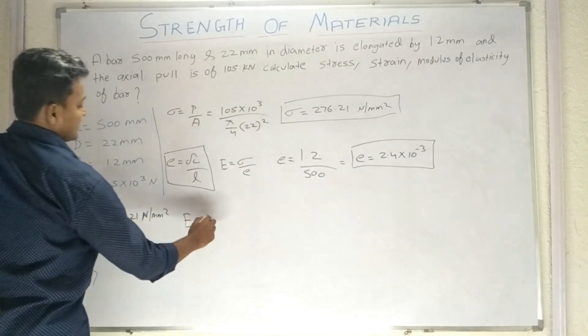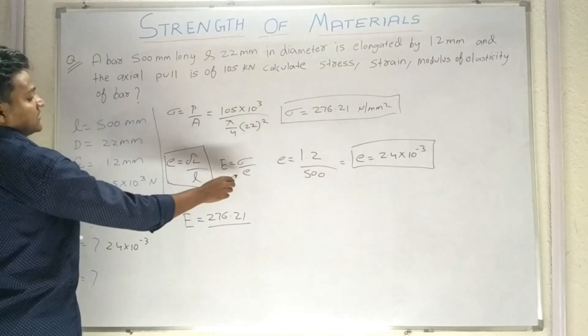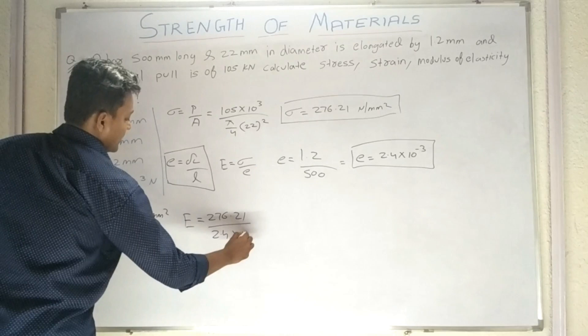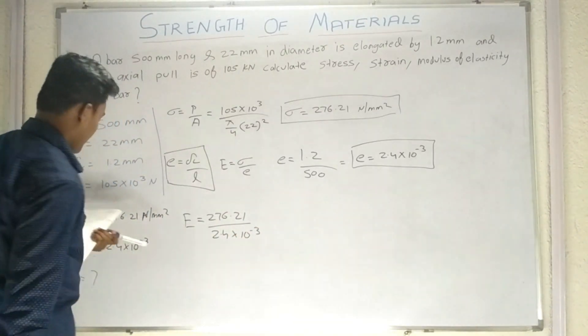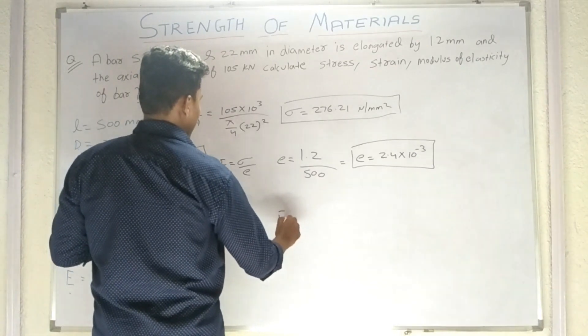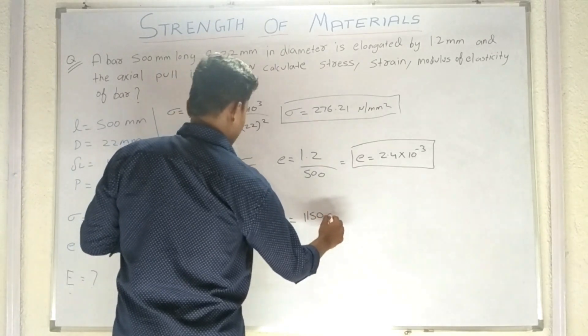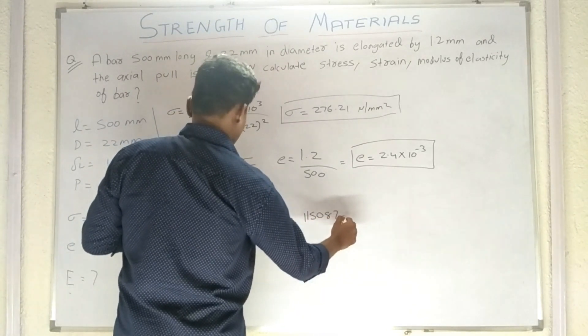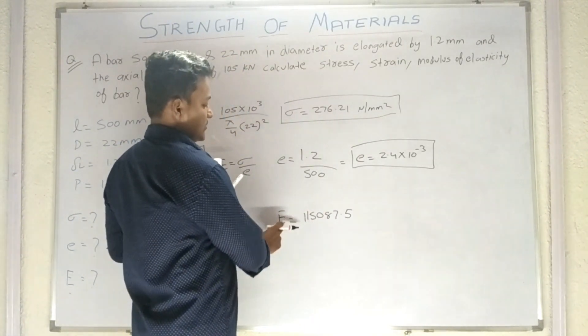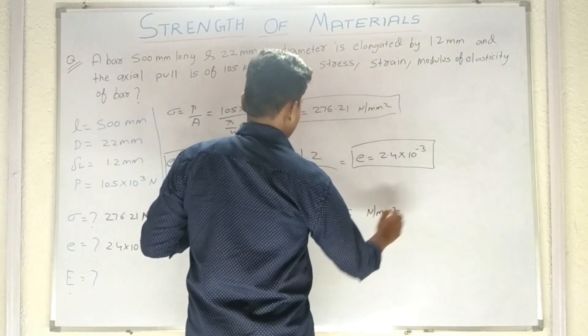Sigma 276.21 hai, aur e jo ki strain 2.4 into 10 raised to minus 3 hai. Ab jab aap isko calculate karenge, so aapko capital E ki value ayegi 115087.5.